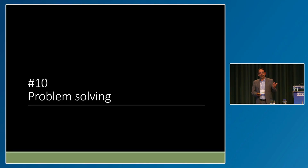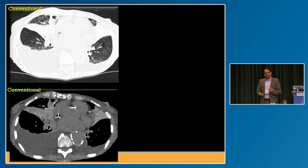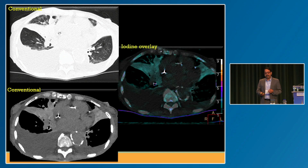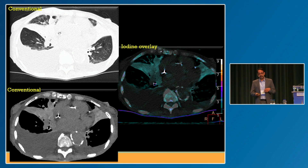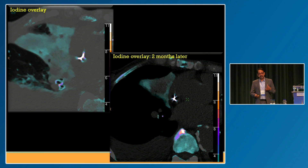A couple of problem-solving situations where you'll find spectral CT useful in interesting and unanticipated ways. Here's a patient with infiltrates in the lungs — they didn't know what these infiltrates were from. On the iodine map, this patient was on amiodarone, and this is amiodarone toxicity. The patient was put on steroids and taken off amiodarone. Two months later, the patient is a lot better.